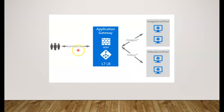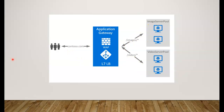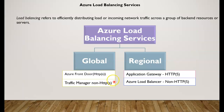For example, when traffic goes to contoso.com, it goes to the Application Gateway, which handles SSL/TLS termination policies, auto-scaling of the backend pool, zone redundancy, and a static virtual IP. All these features are built into the Application Gateway, helping to route traffic properly. This covers all possible options within the load balancing services for the regional wing.